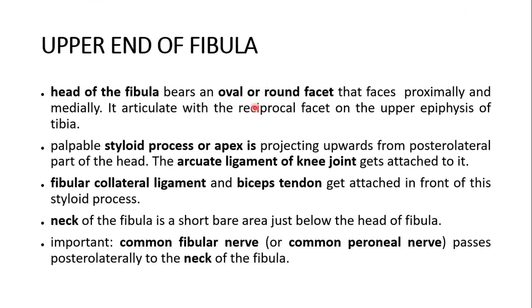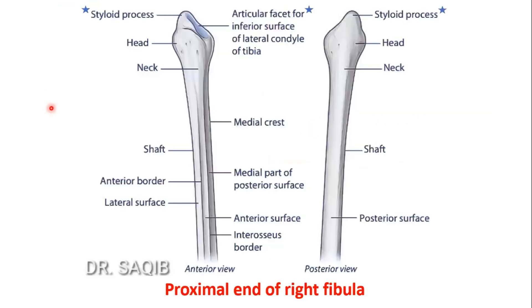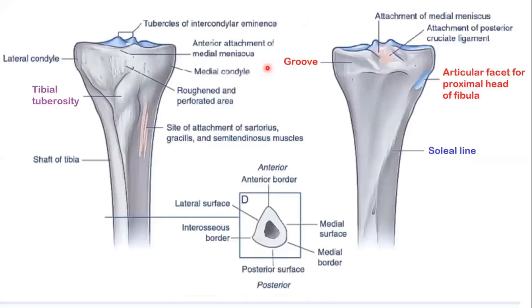The upper end of the fibula — we'll describe this long bone starting with the upper end, the head of the fibula. There is an oval articular facet that faces proximally and medially. It articulates with the reciprocal facet on the upper epiphysis of the tibia. You can see over this head the facet for the inferior surface of the lateral condyle of the tibia. And here you can see the articular facet for the proximal head of the fibula on the tibia.